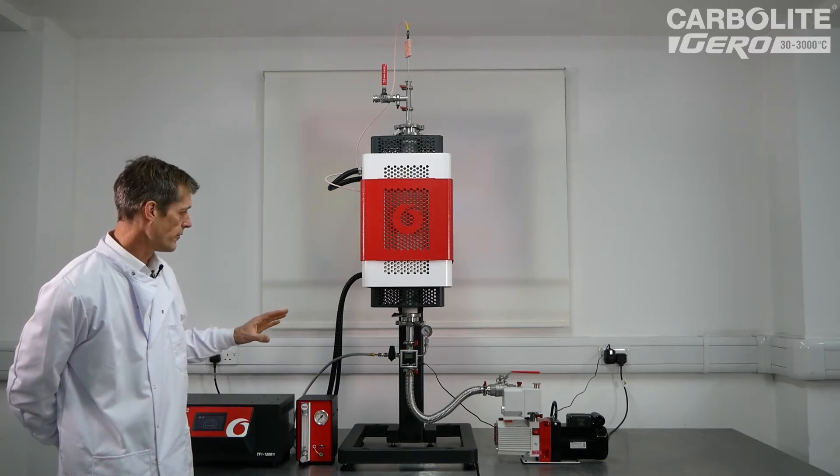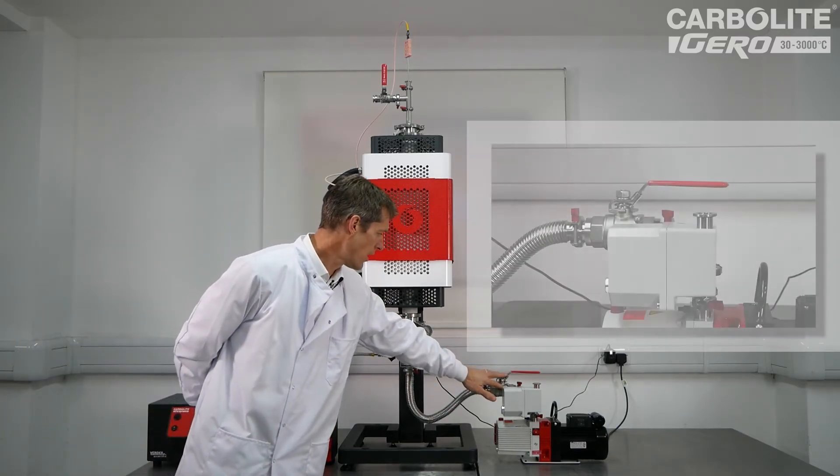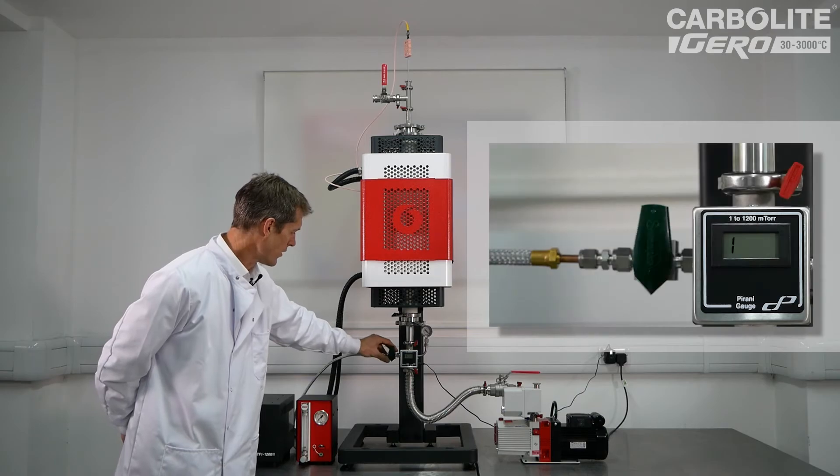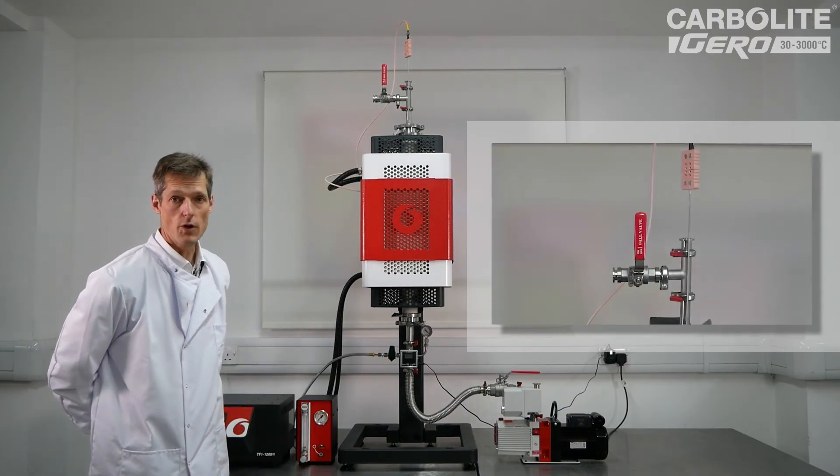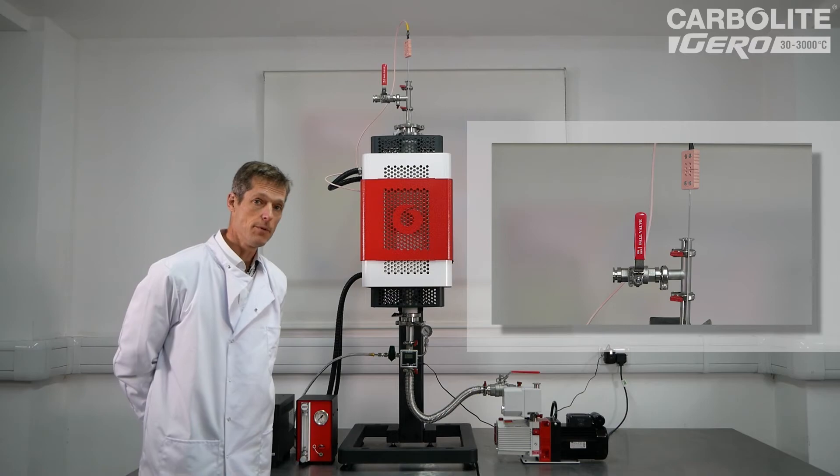There's three vacuum valves on the system, one to control the pump, one here for the gas inlet, and one on top for a quick air inlet purge.